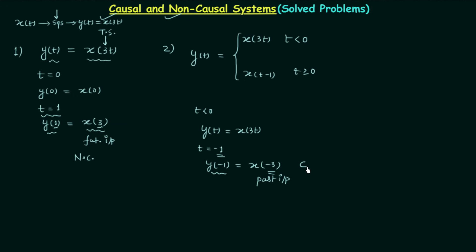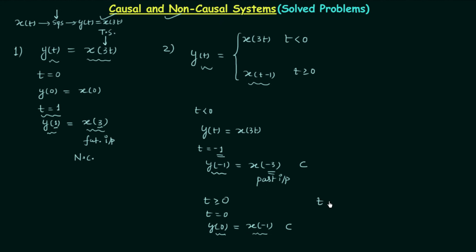We also have to check the other case. For t greater than or equal to 0, with y(t) equal to x(t-1), let's take t equal to 0: we get y(0) equal to x(-1). The present output is dependent on the past input, so the relationship indicates causal. When t equals 1, we get y(1) equal to x(0), and again x(0) is a past input relative to y(1). So again the system is causal.